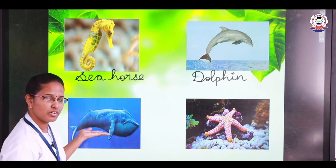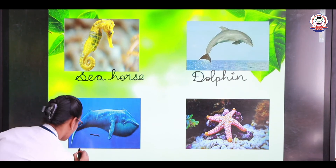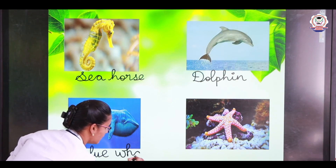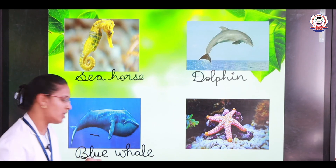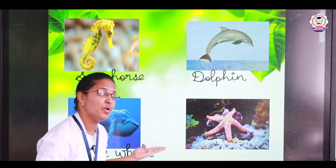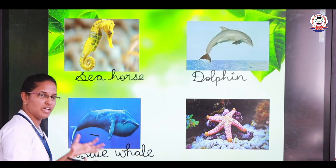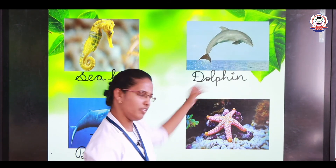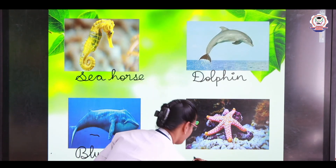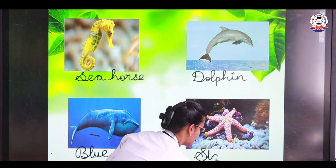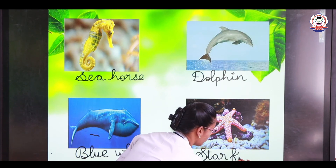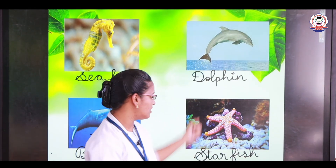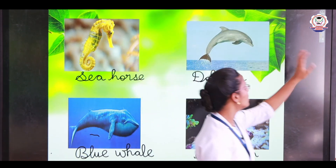What is this? It is a whale — a blue whale. B-L-U-E W-H-A-L-E. Blue whale is the largest animal in the world. And the last one — it is very beautiful and comes in different colours. What is this? It is a starfish — S-T-A-R-F-I-S-H. It looks like a star, so we call it starfish. We can see starfish in different colours.